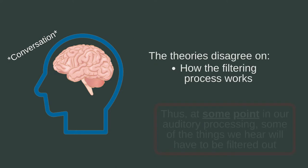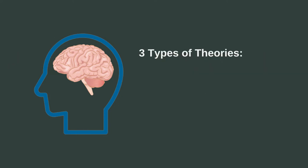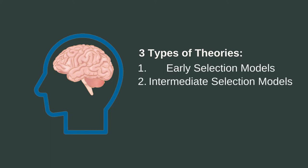What the theories disagree on, however, concerns how this filtering process works as well as when it occurs. Broadly speaking, the various theories can be categorized into three types: the early selection models, the intermediate selection models, and the late selection models.